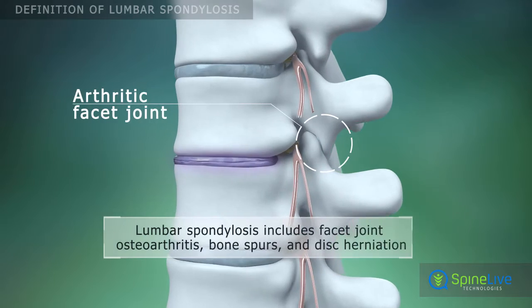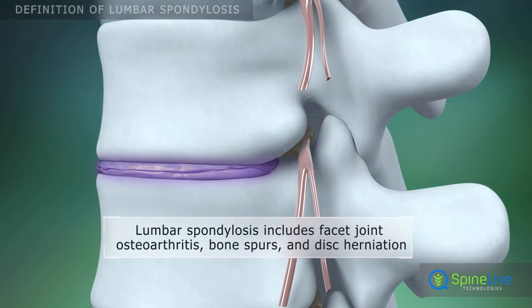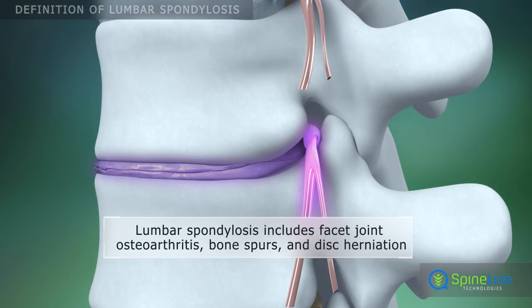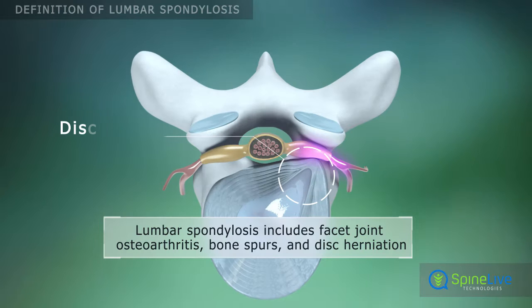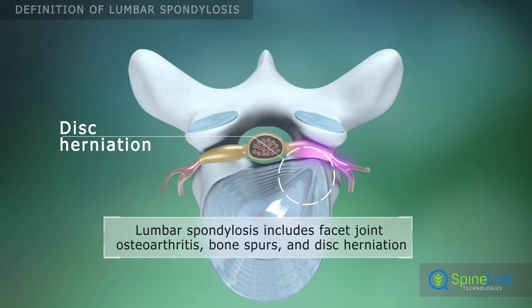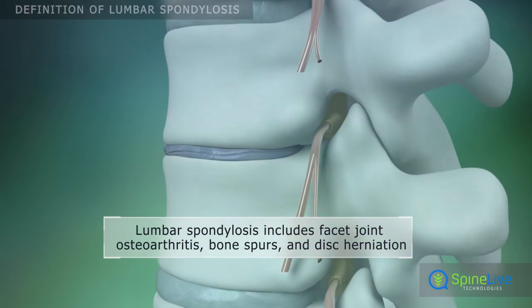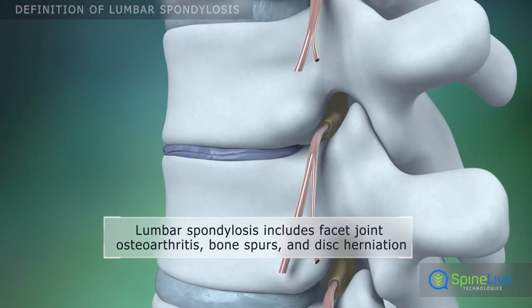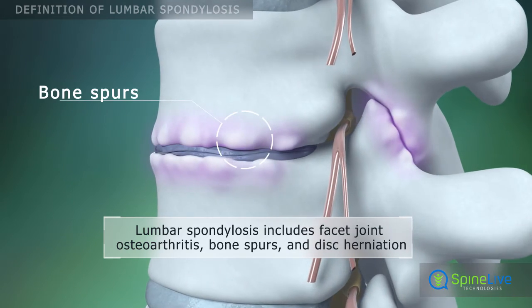Lumbar Spondylosis is a degenerative condition of the lumbar region of the spine. This pathological condition can include disc herniation, facet joint osteoarthritis, and bone spurs.